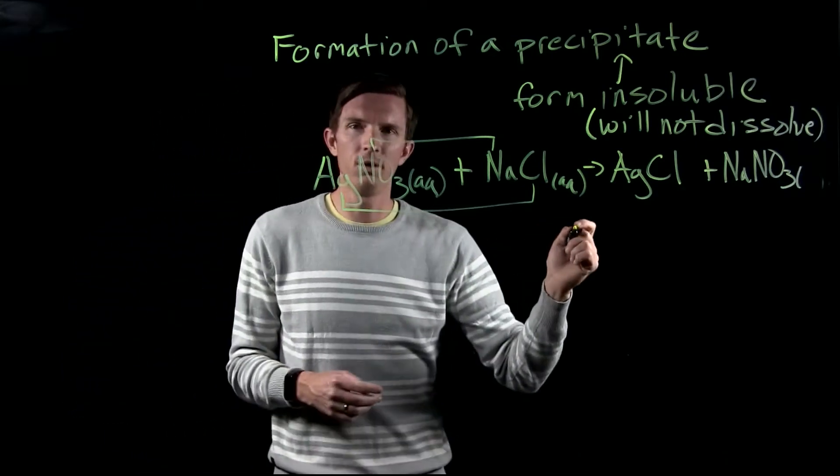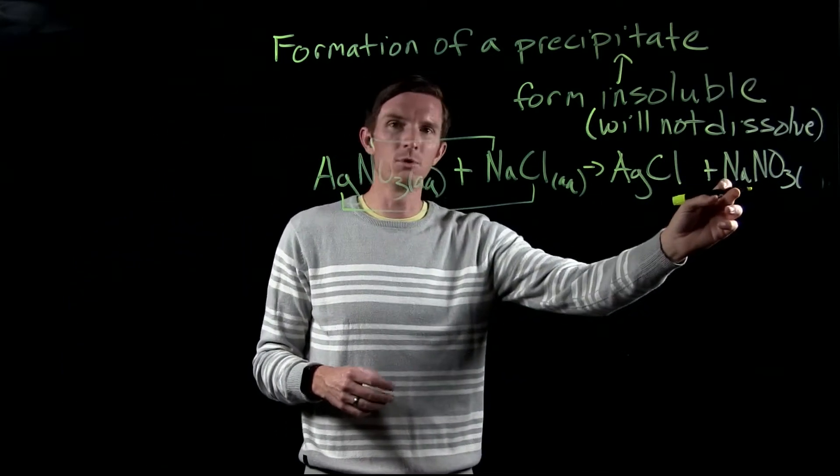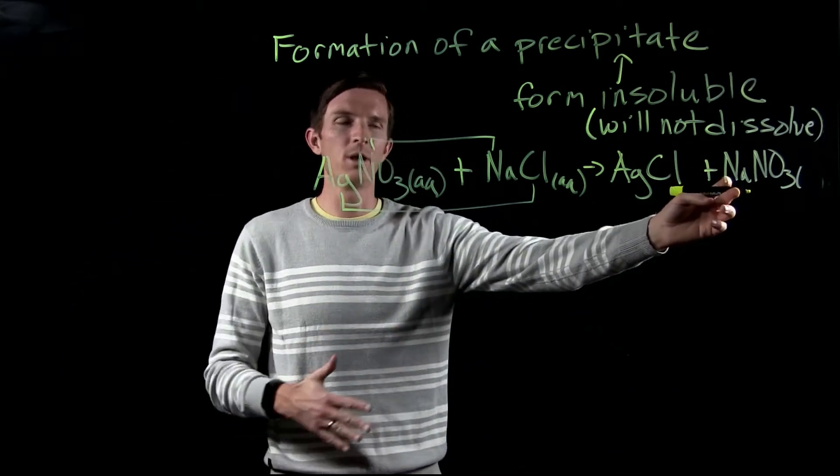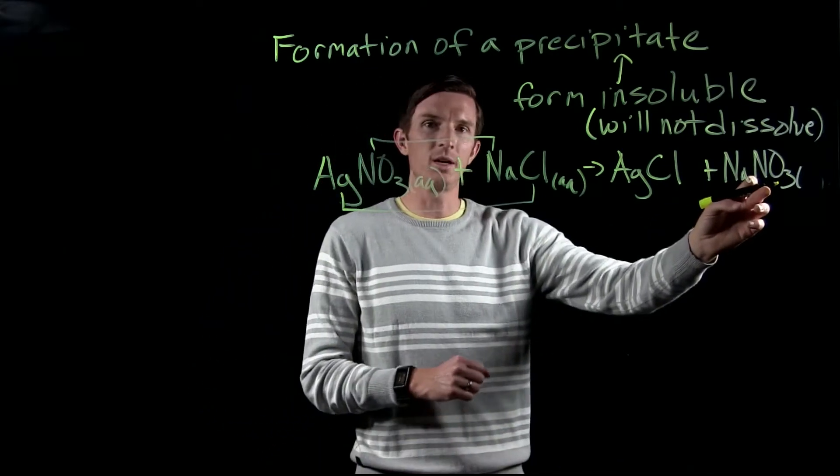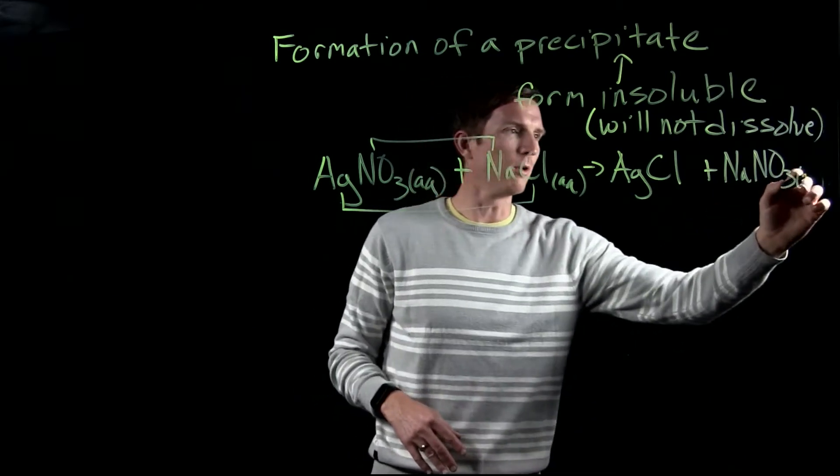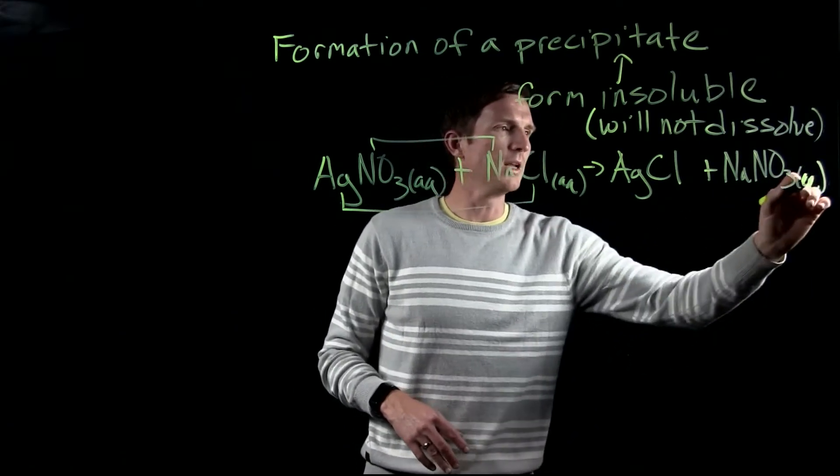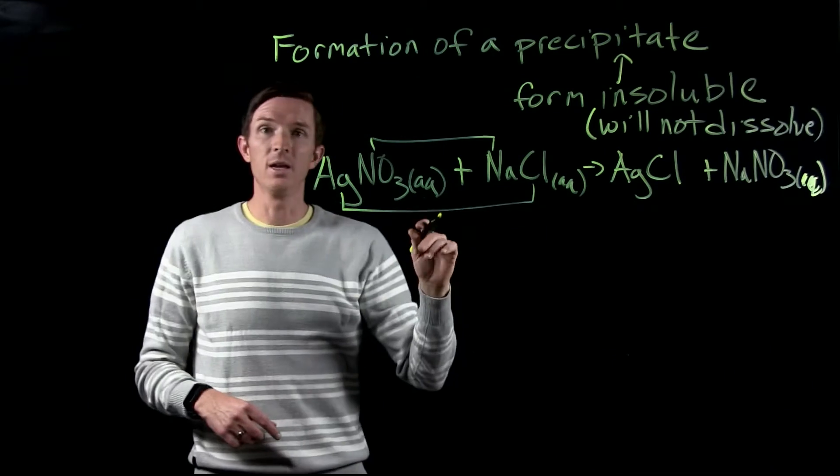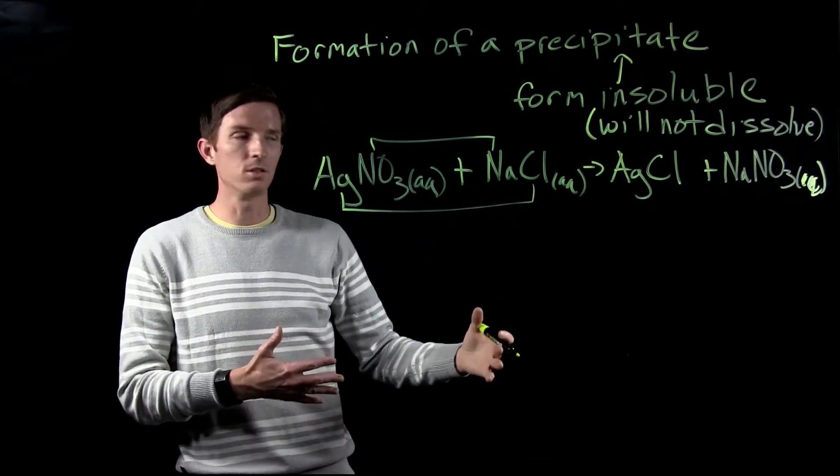Well, we go and we look at the solubility rules for something like sodium. Group 1A ions are always soluble no matter what they're partnered with. Nitrate ions again always soluble no matter what ion they are partnered with. So therefore we can say it is aqueous. It's going to be soluble and stay dissolved in our solution.